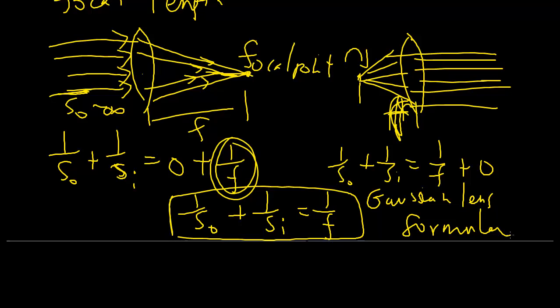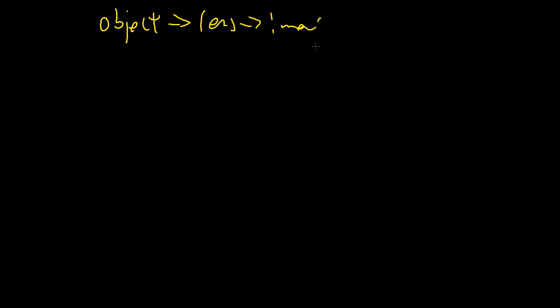Once again, there is a certain sign convention that we have to be careful about. Basically, for lenses, the thinking is, you expect to have an object going through a lens, then forming an image on the other side. So this is the case where everything is positive.